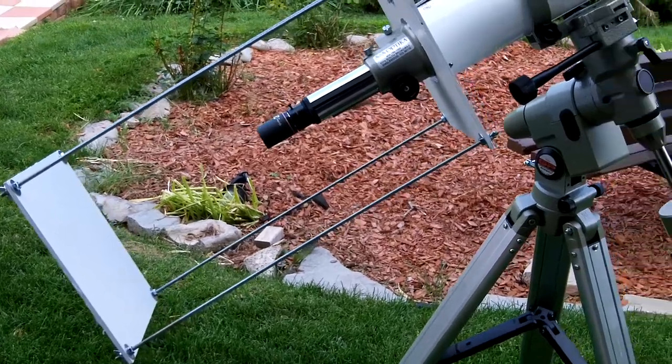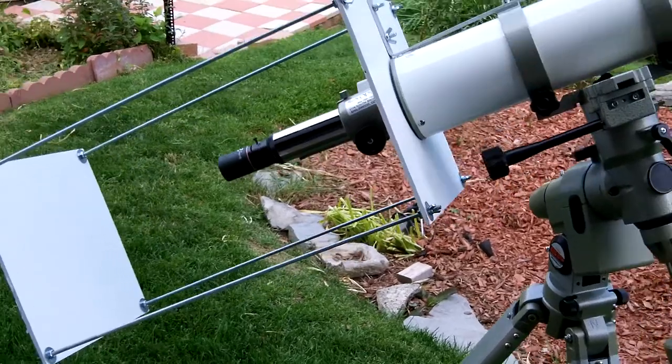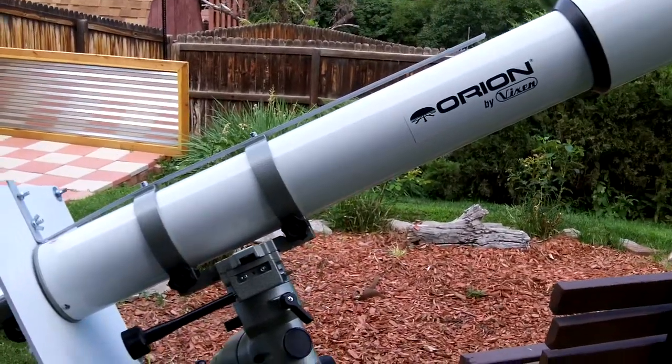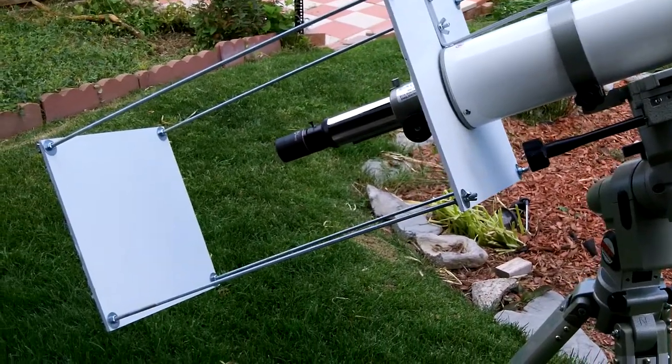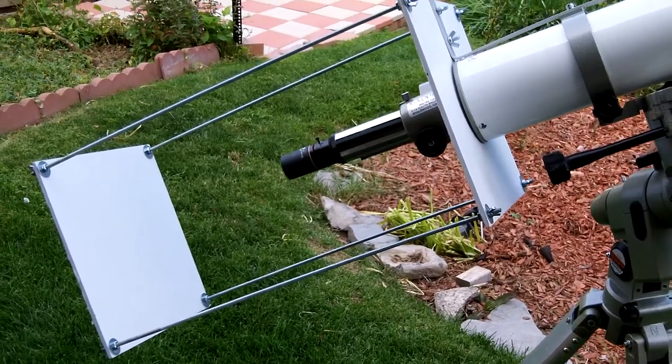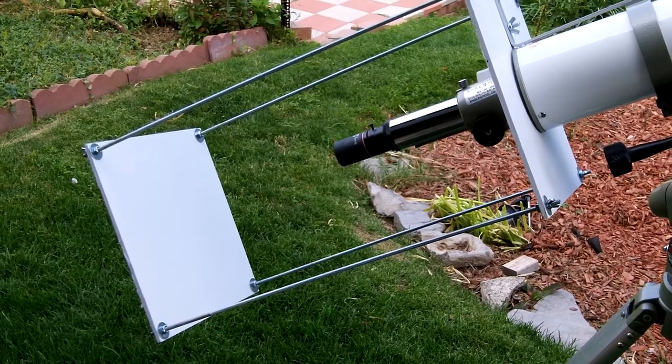Today we're going to talk about how to build a projection box for a telescope. This is basically going to be used to look at the sun in a safe manner. The sun, of course, is our closest star, and it's actually a pretty interesting and fascinating object to look at.